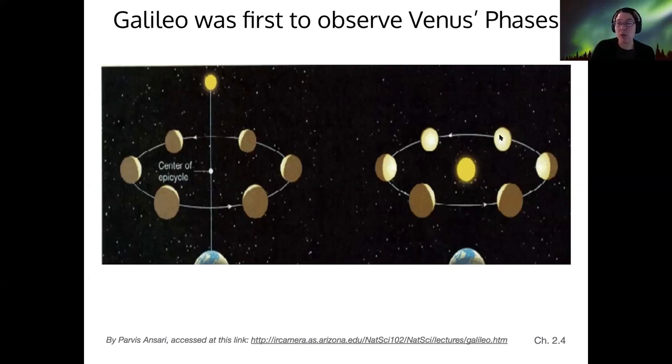But in a heliocentric model where Venus goes around the Sun and Earth is just on the outside of that orbit, then sometimes when Venus was farther away from the Sun than us on the opposite side of the Sun, we would see an almost full phase of Venus, or what we call a gibbous phase. We would also be able to see more half phases as well as crescents. If we could observe all of the phases of Venus, then that would show that the geocentric model was wrong.